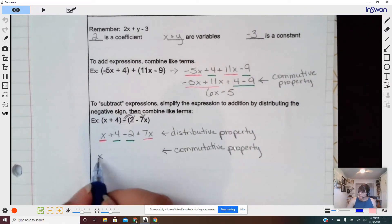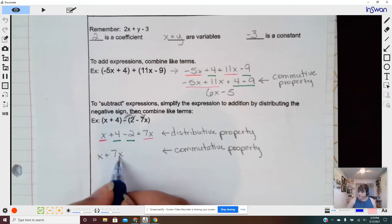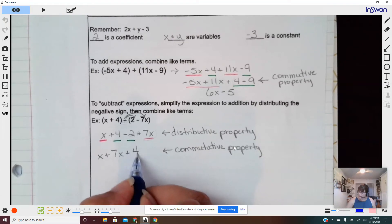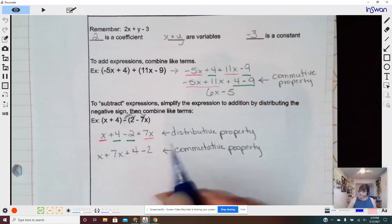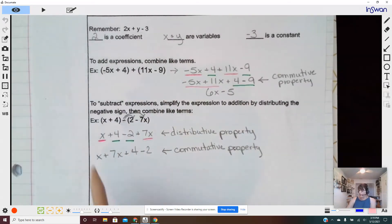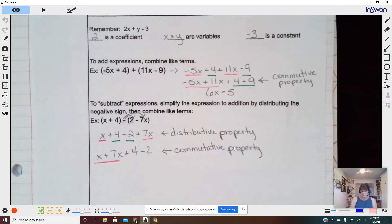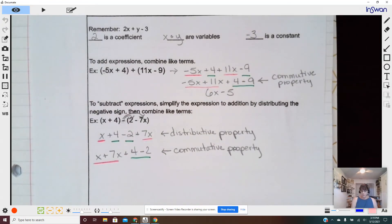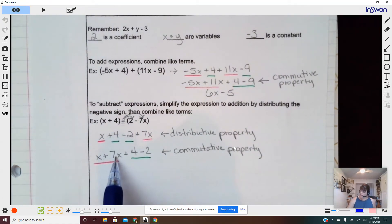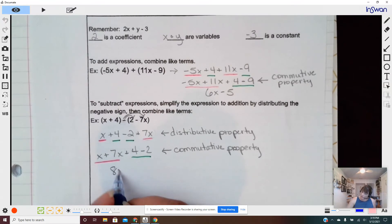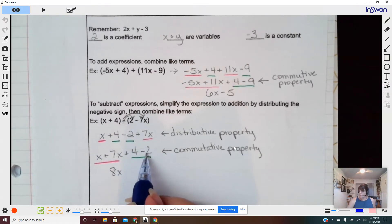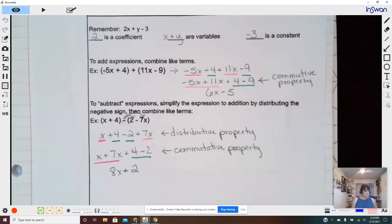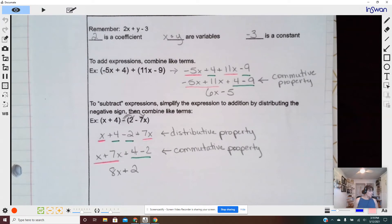So x plus seven x, because the symbol comes with it, plus four minus two. Oh, look how easy it is when they're next to each other. So I have an Oreo and seven Oreos, that's eight Oreos, four and negative two. More positives. So that's two.